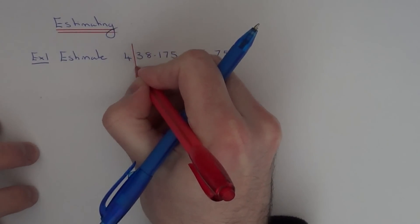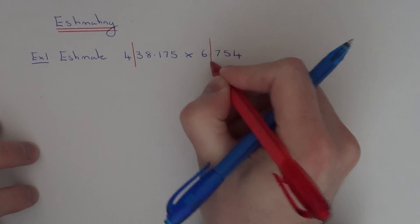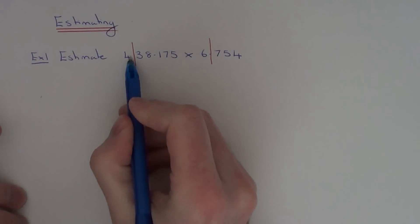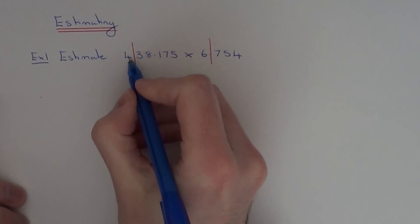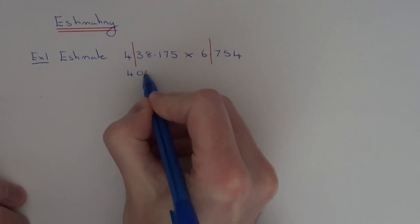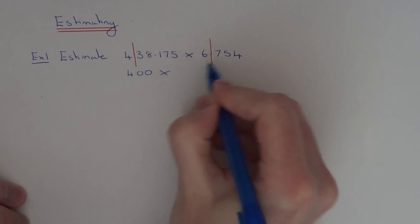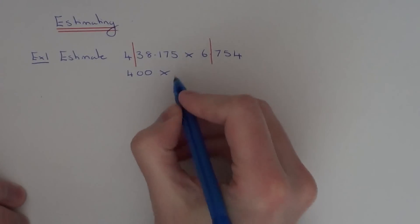So let's just go one number from the start, one number from the start there. So this to one significant figure will be 400. The second number to one significant figure will be 7.